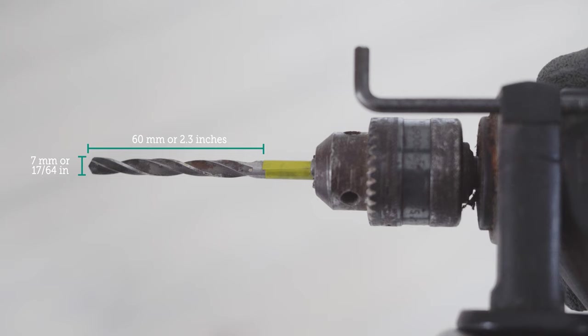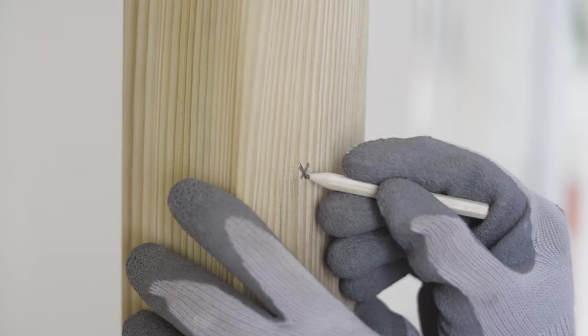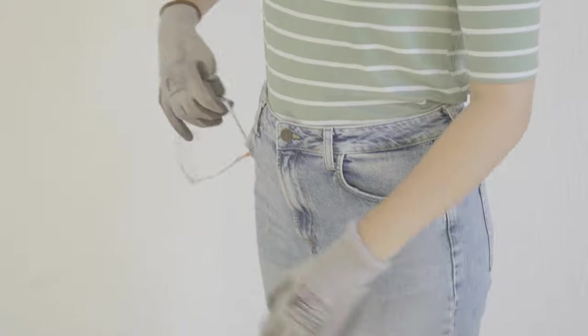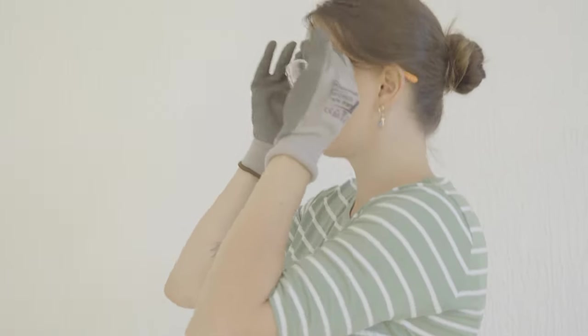We use tape to mark a 60 mm drill depth on our wood drill. We have already determined and marked where to drill. Always prioritize safety when drilling by wearing gloves and protective glasses.